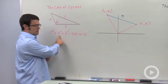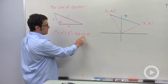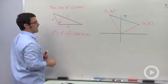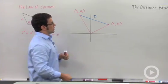c squared equals a squared plus b squared minus 2ab cosine theta. Again, a and b are the two known sides, theta is the angle between them. Let's look at our picture here.